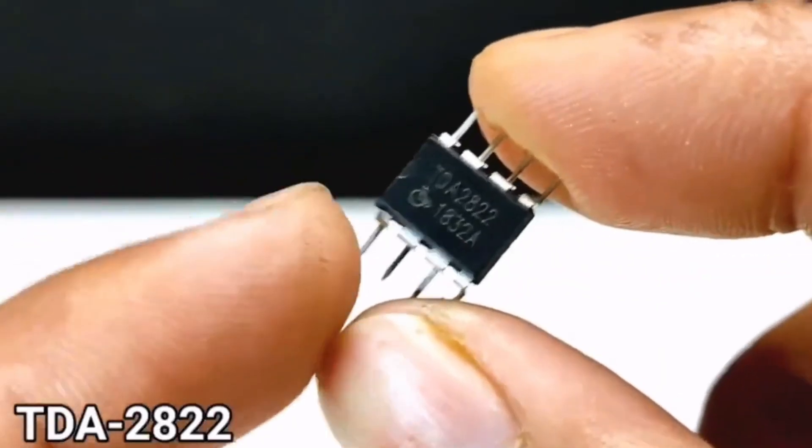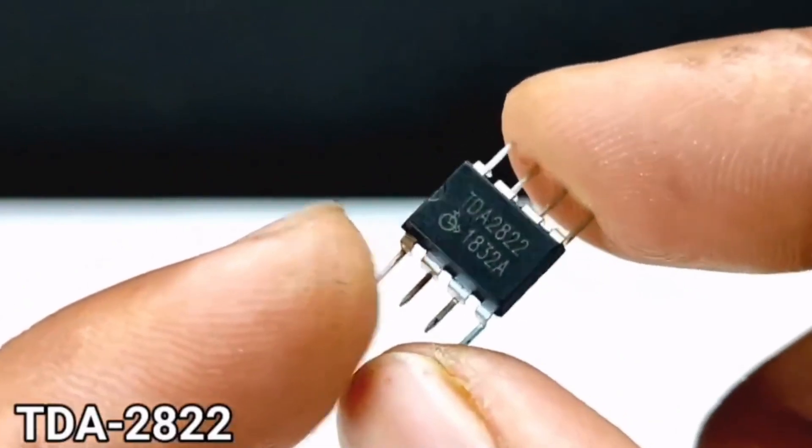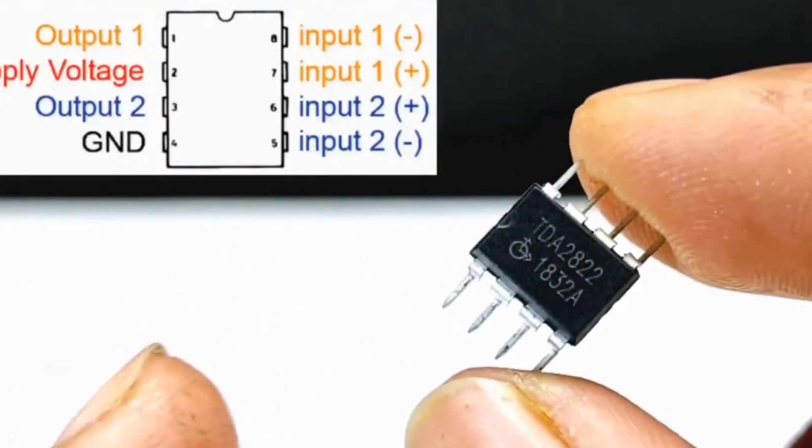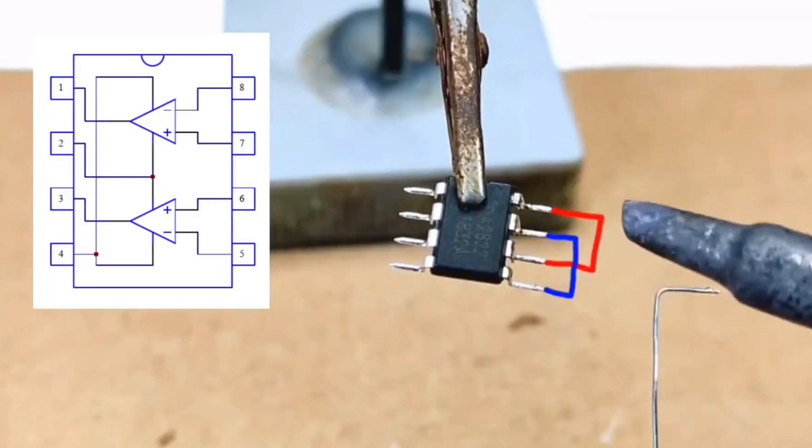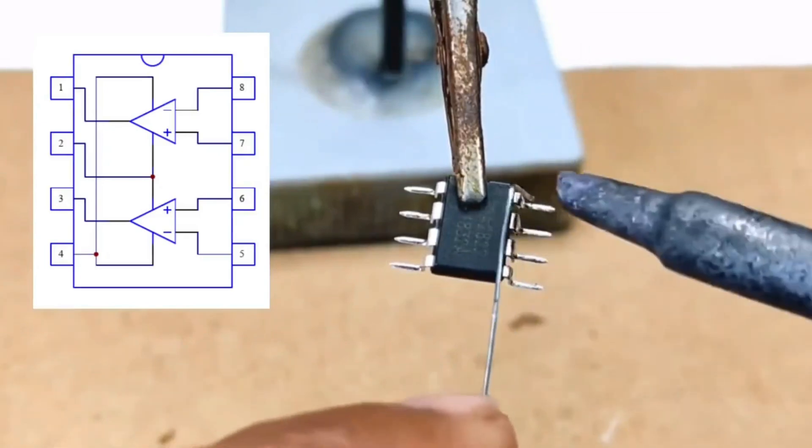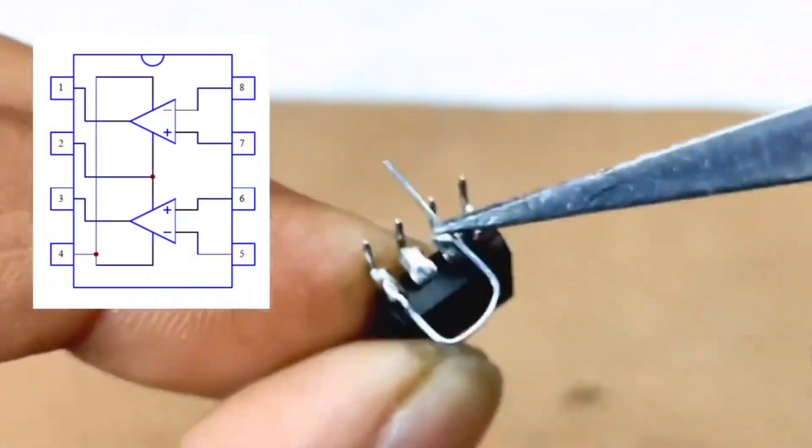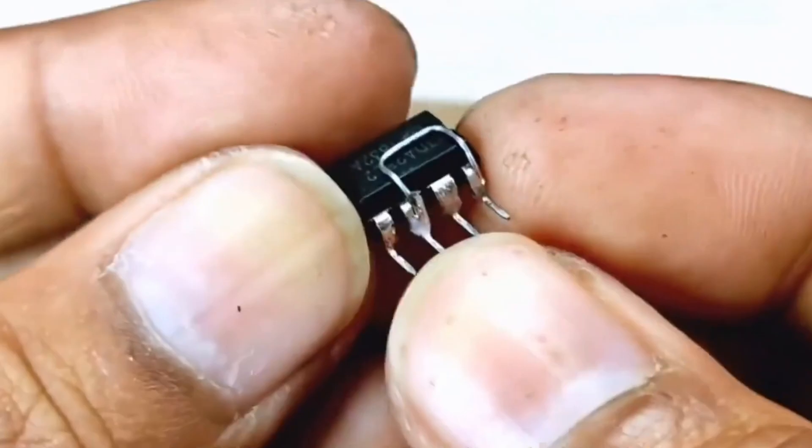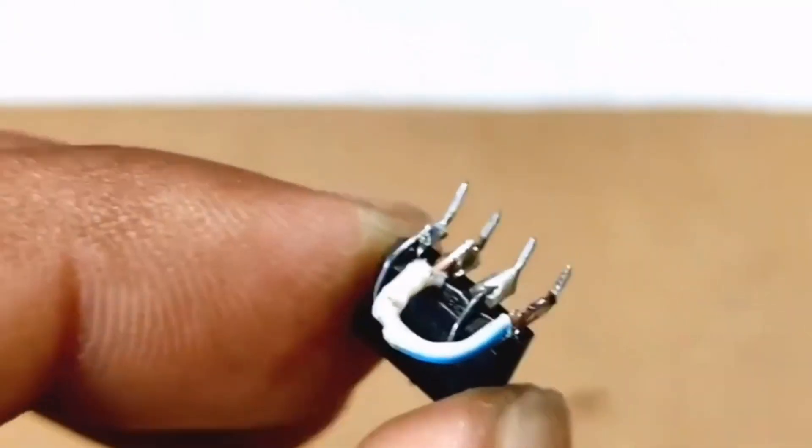The control chip used here is the TDA2822. Although this chip is typically used as an amplifier, in this case it functions as a voltage comparator. Pins 5 and 7, as well as pins 6 and 8 of the chip need to be connected using wires. The inverting and non-inverting inputs of both operational amplifiers are connected in parallel. This ensures that during operation, the outputs of these two operational amplifiers will be opposite.